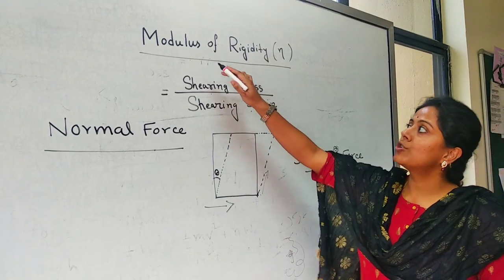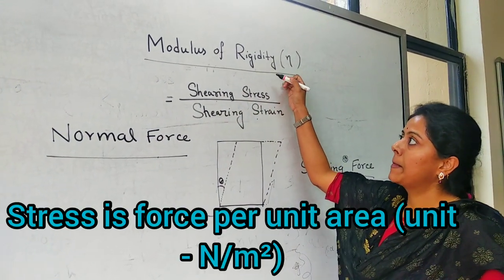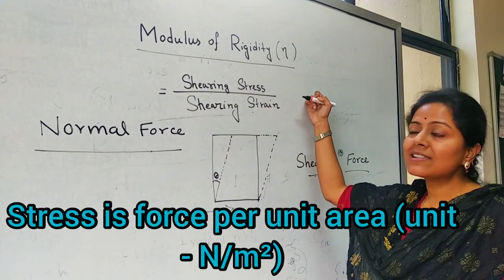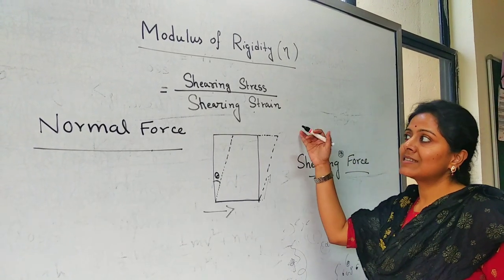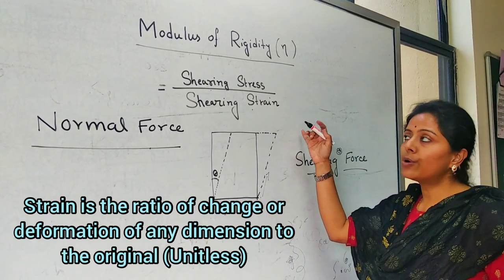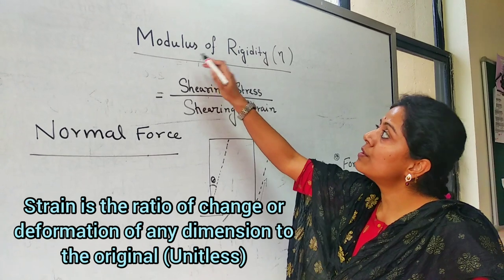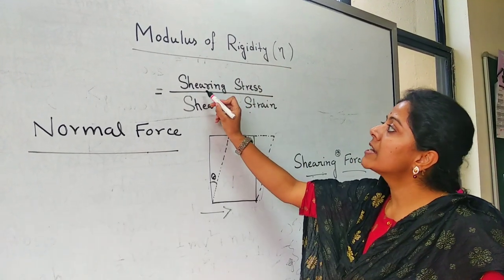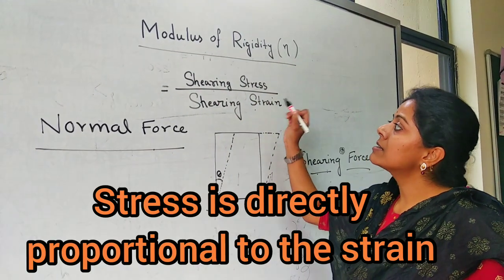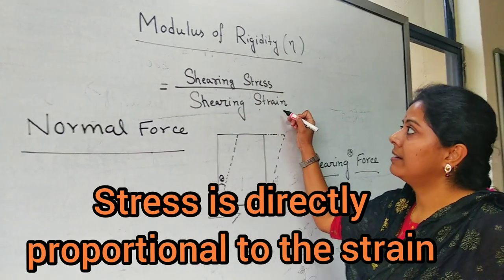What is modulus of rigidity? We know elasticity is stress by strain ratio. Similarly, modulus of rigidity is shearing stress by shearing strain.